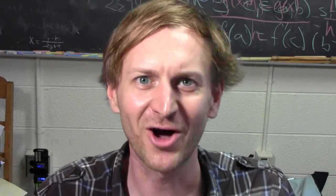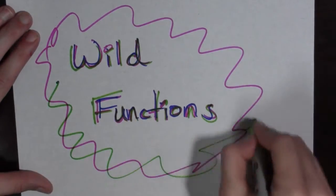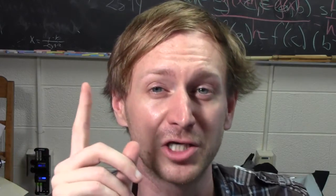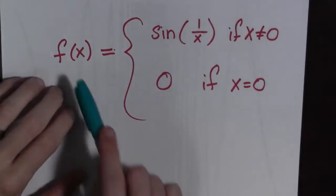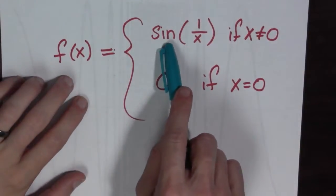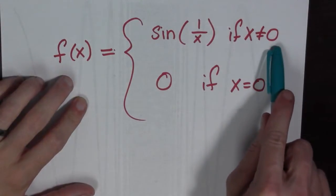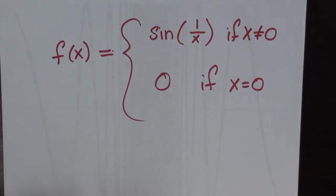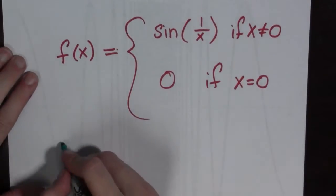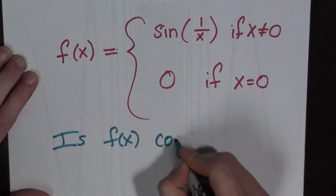Hi there. Let's talk about some wild functions. The first function we're going to talk about is f of x equals sine of 1 over x if x is not equal to 0, and 0 if x equals 0. One question you might ask is: is f of x continuous?